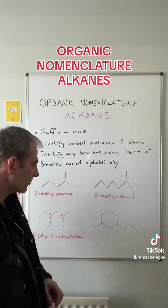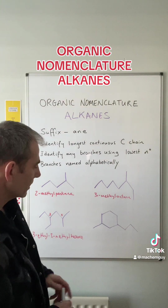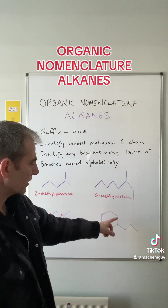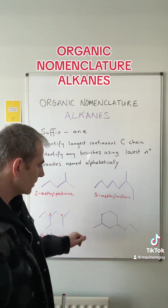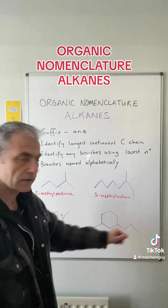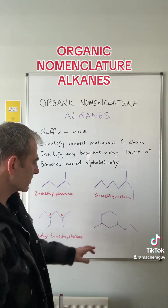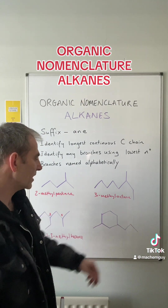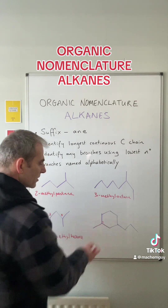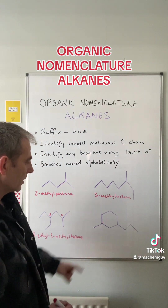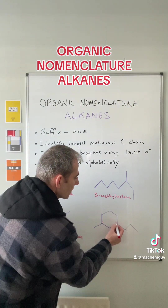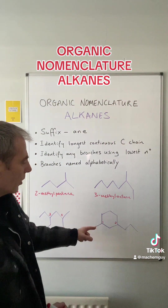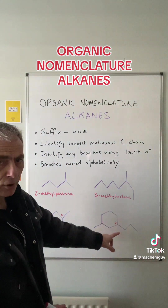The final example is a cyclic compound — a cyclohexane ring. The branches are a methyl group and a propyl group (one, two, three carbons). Applying the alphabetical rule, M comes before P, so the methyl carbon is numbered one. Going around the ring the shortest way to the propyl group gives one, two, three — so this is 1-methyl-3-propylcyclohexane.